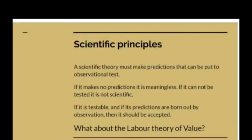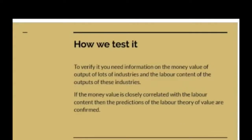If a theory is testable and its predictions are borne out by observation, then the theory should be accepted. How does this apply to the labour theory of value? To verify it, you need information on the money value of the output of lots of industries, and you need information on the labour content of the outputs of these industries. If the money value is closely correlated with the labour content, then the predictions of the labour theory of value have been confirmed. If they were uncorrelated, then the labour theory of value would clearly be falsified.